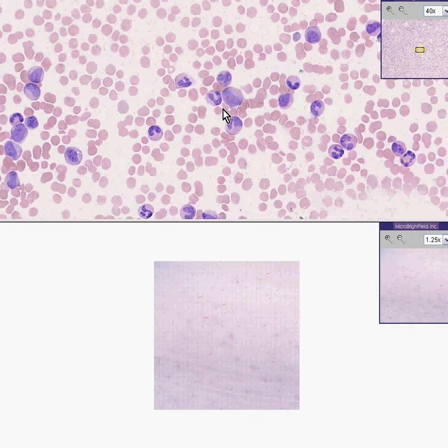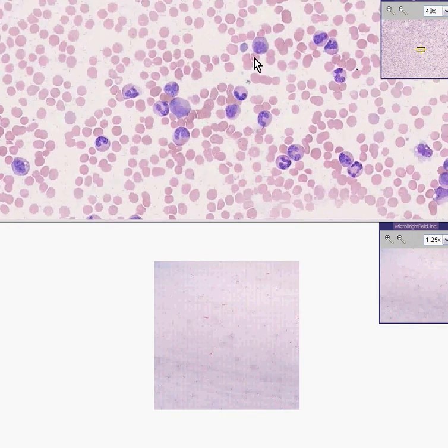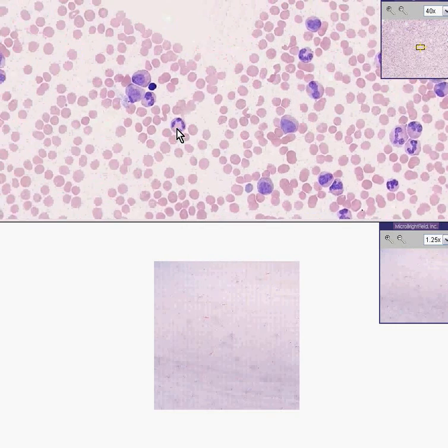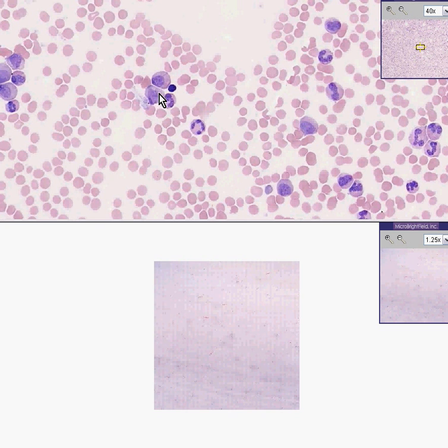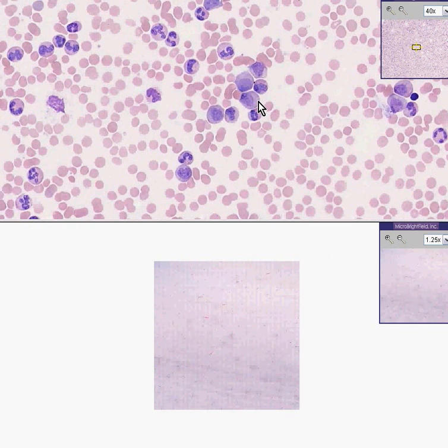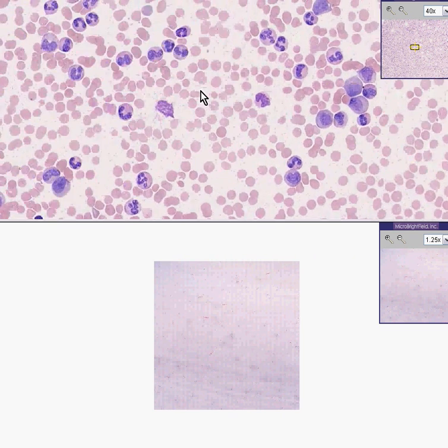In chronic myelogenous leukemia, not only do we have a proliferation of the neutrophilic series, but we may frequently have increases in the red and platelet series as well. So even though it's called chronic myelogenous leukemia, it is classified as a myeloproliferative disorder in which the red series and platelets may be elevated as well.